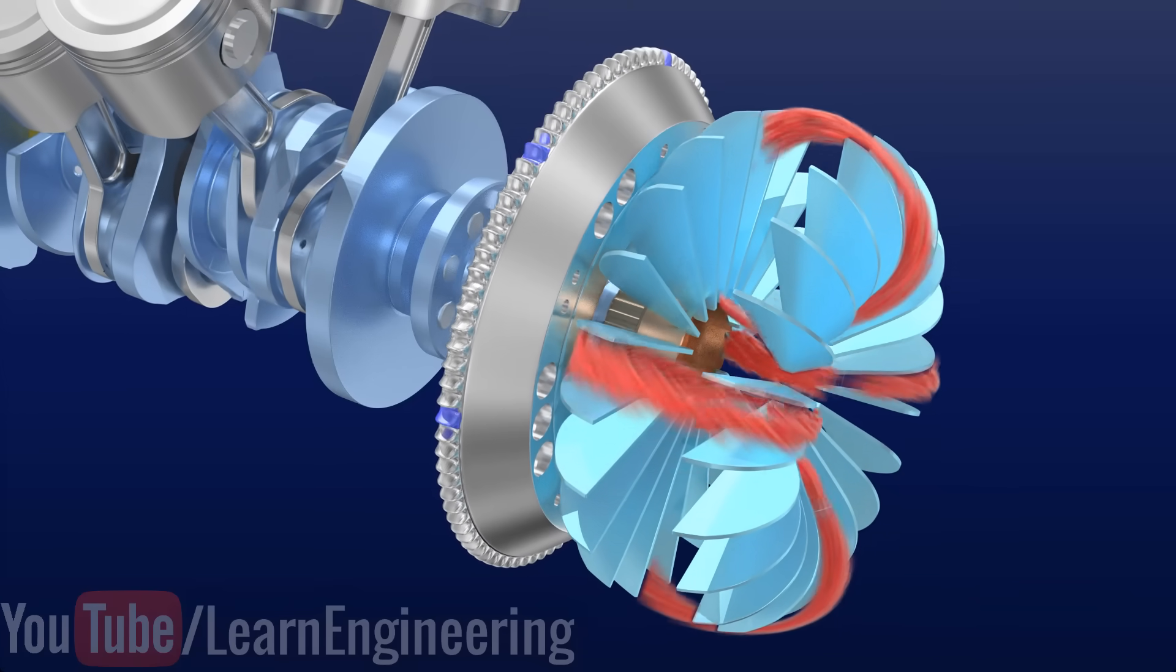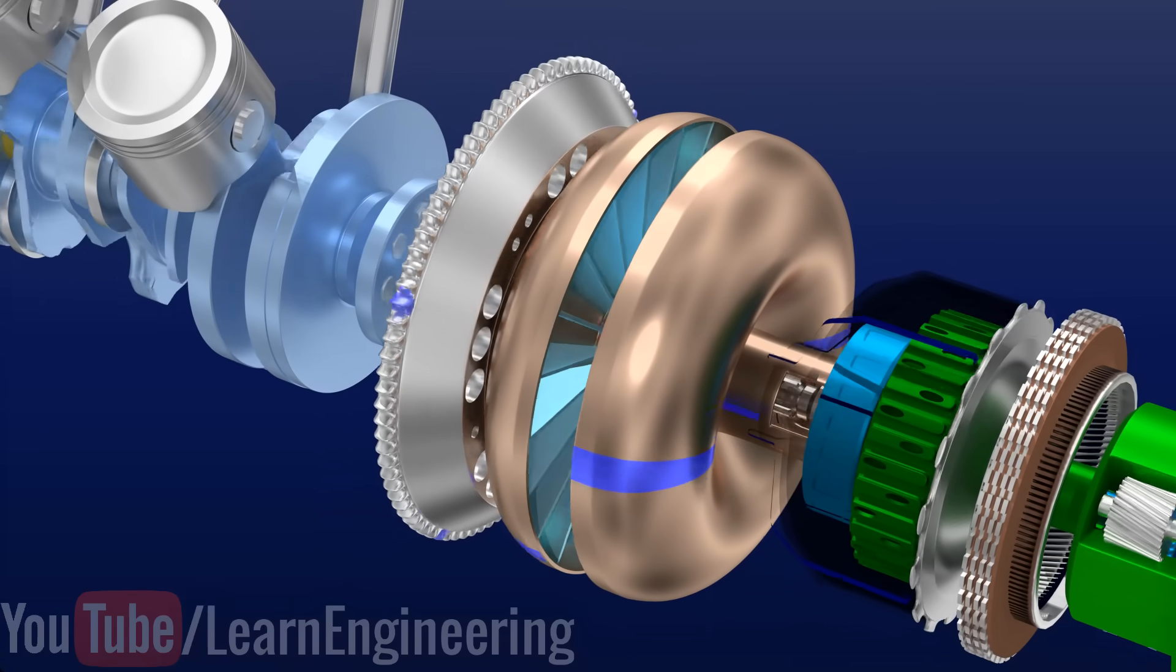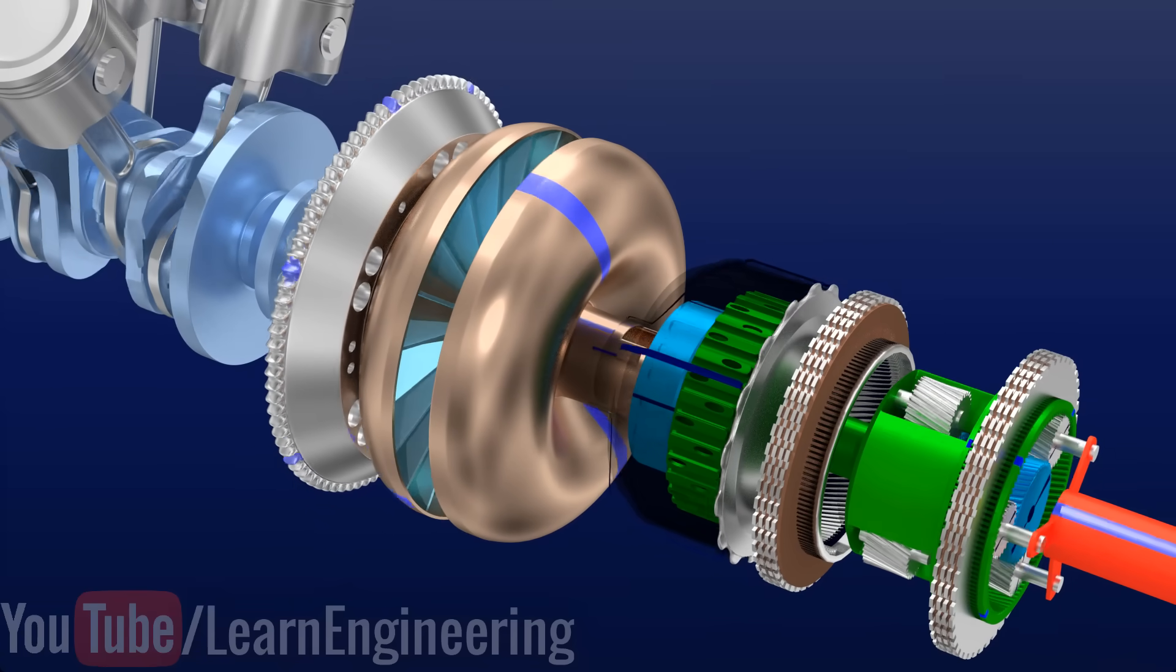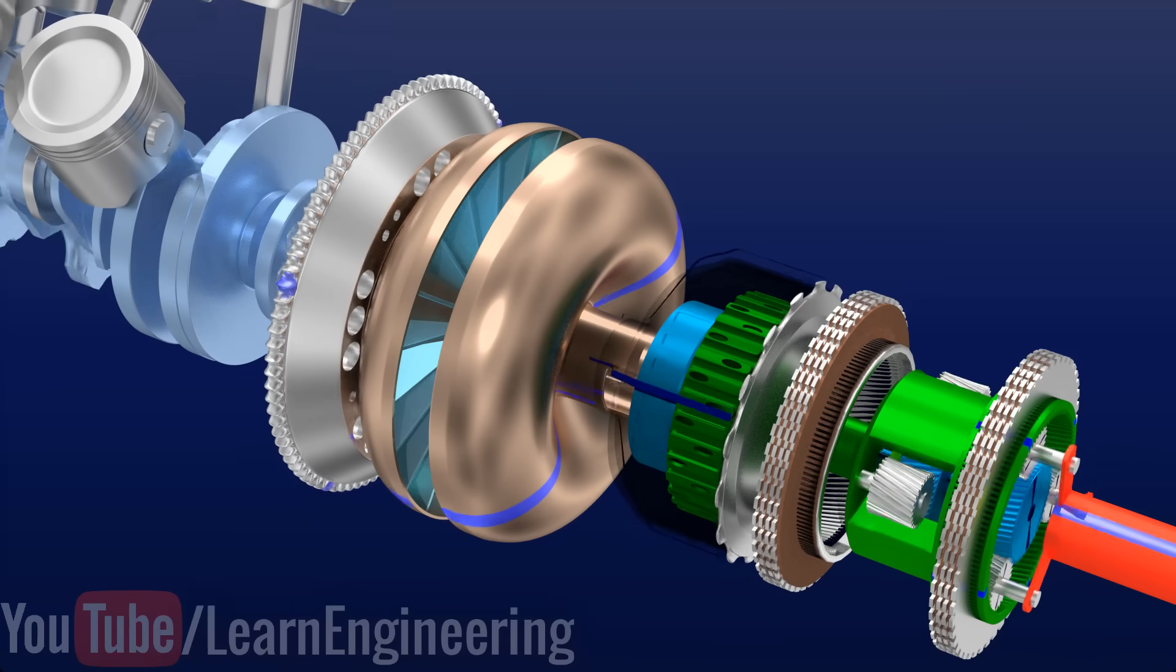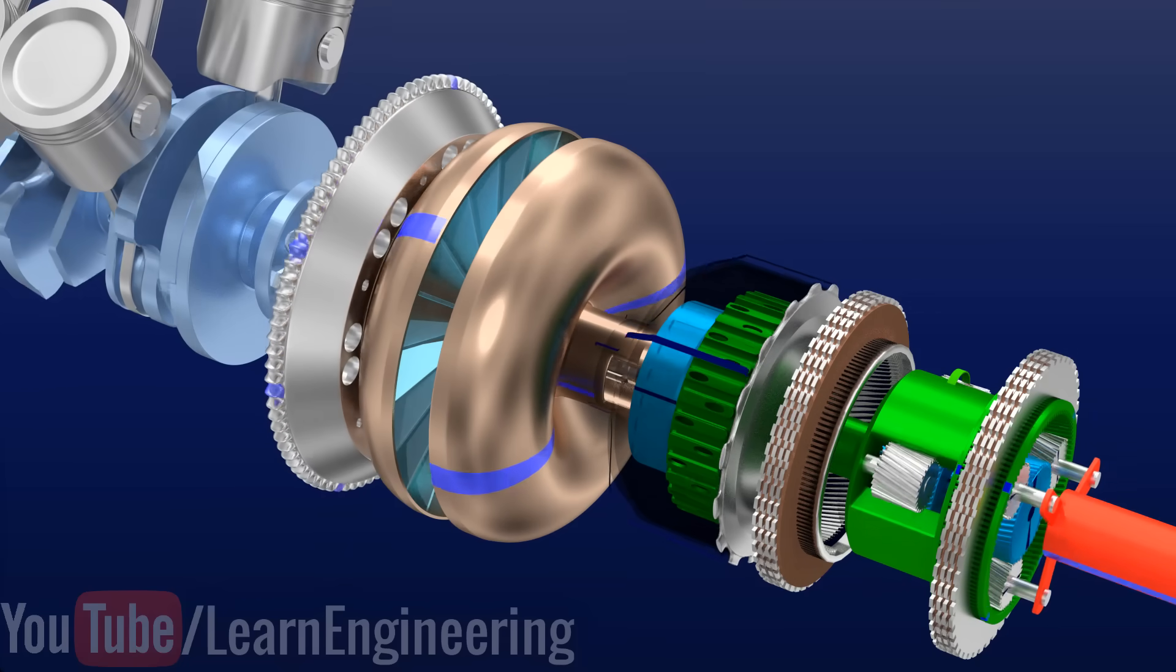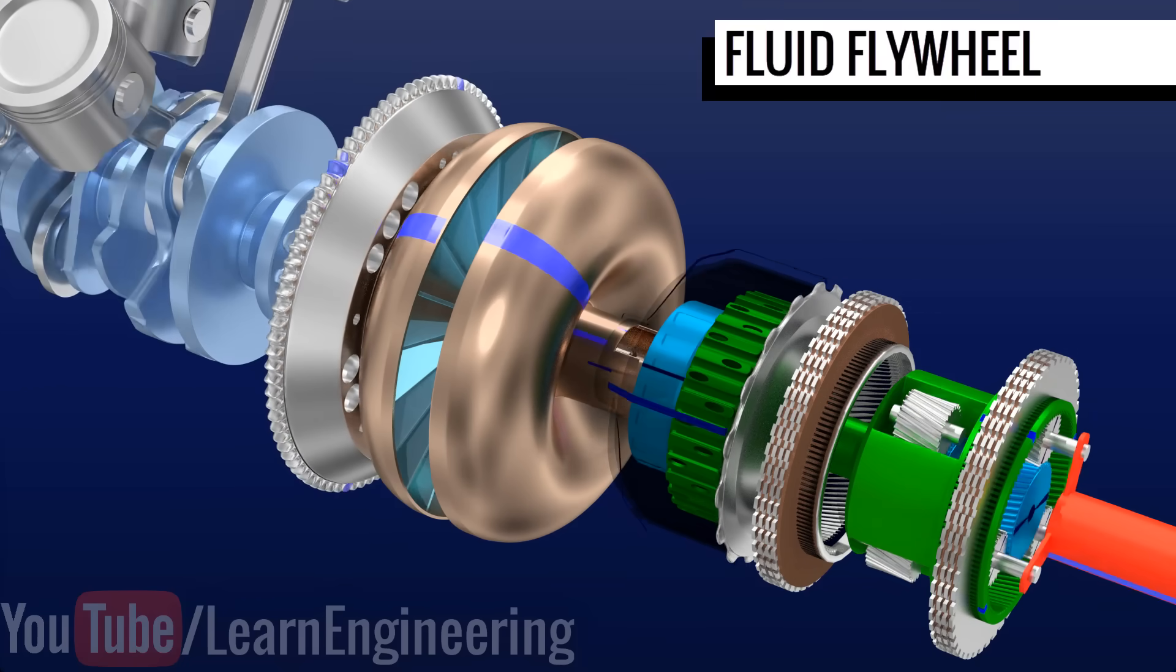The turbine is connected to the transmission. This way, the engine power is transferred to the transmission via the transmission fluid. More specifically, this configuration is known as a fluid flywheel.